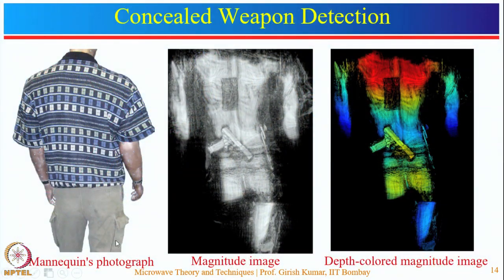The next application is concealed weapon detection at security. Here is a photograph of a mannequin containing clothes along with concealed weapons — these could be scissors, a knife, a pistol, a chip, or any non-metallic body. When exposed to microwave radiation, it shows different reflectivity profiles for non-metallic or metallic objects compared to the human body. The corresponding variations can be seen in the image profile after post-processing. The image shows the concealed weapon on the person. A colored image can also be created where red indicates less distance from the measurement system and blue indicates more distance.